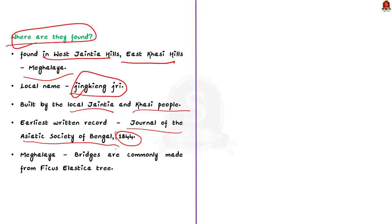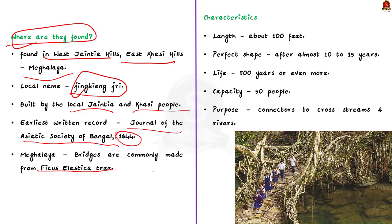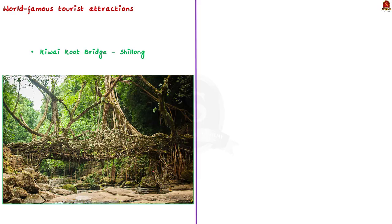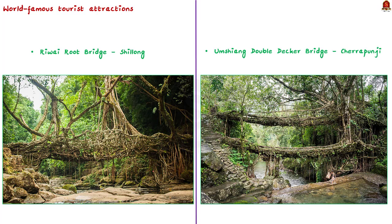In Meghalaya, living root bridges are commonly made from the rubber tree species Ficus elastica. The bridges are about 100 feet long, and a perfect shape is obtained after 10 to 15 years. Once fully grown, these roots last for about 500 years or more, and some bridges can carry up to 50 people. The earliest written record dates to the 1844 journal of the Asiatic Society of Bengal. The two most popular are the Riwai root bridge in Shillong and the Umshiang double-decker bridge in Cherrapunji.